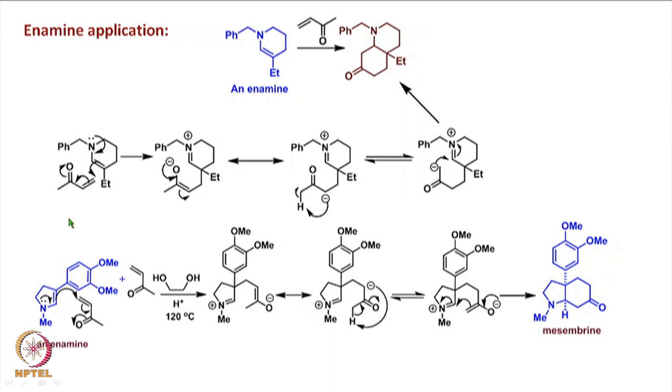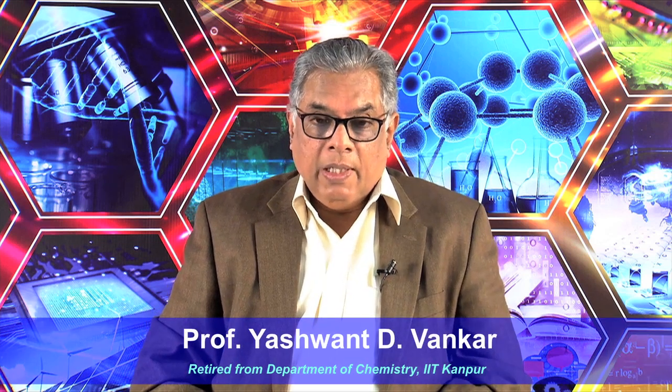Reactions of enamines are useful in many synthetic operations. However, there are some problems associated with enamine chemistry, and thus there should be some other way of addressing these issues. Looking at further developments in C-C bond formation, the ultimate aim is to achieve optically pure C-C bond formation — because in addition to asymmetric reduction and asymmetric oxidation, we also need methods which allow asymmetric C-C bond formation to take place.